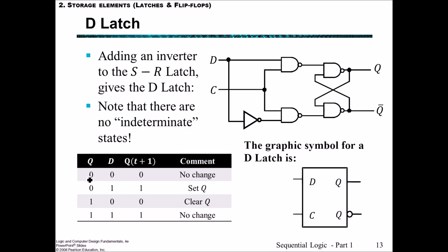Looking at the state table, we have the possible values of Q and the possible values of D, and then what happens in the next state. Current state being 0 and D input being 0 means no change. Current state 0 and D=1 sets the next state to be 1. Current state 1 with D input of 0 clears Q to 0, and current state 1 with D=1 means no change — it stays at 1.